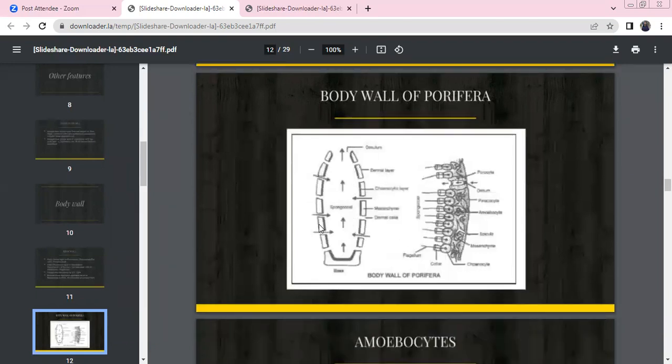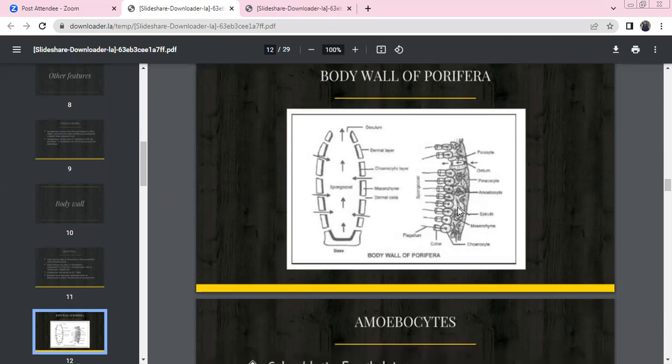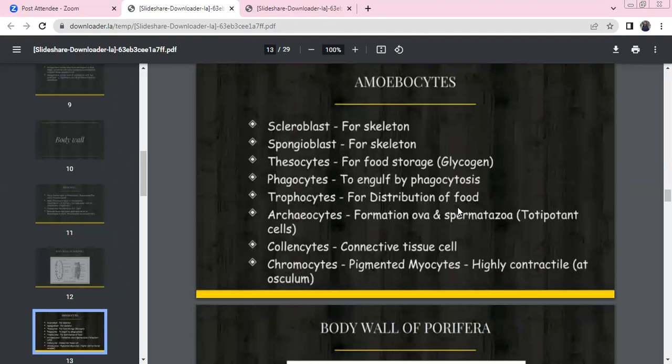Here we have a simple canal system with ostia, spongocoel, and osculum lined with collar cells. The amoebocytes include scleroblast for skeleton, spongioblast for skeleton, thesocytes for food storage (glycogen), phagocytes to engulf bacteria, trophocytes for distribution of food, archaeocytes which form ova and spermatozoa (totipotent cells), collenocytes as connective tissue cells, and chromocytes which are pigmented myocytes, highly contractile at the osculum.